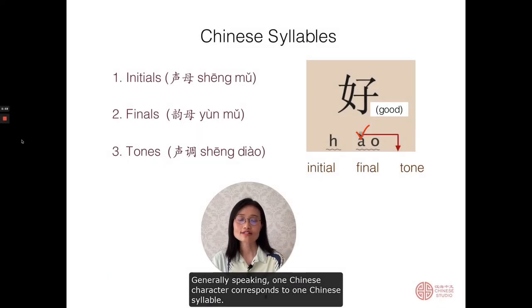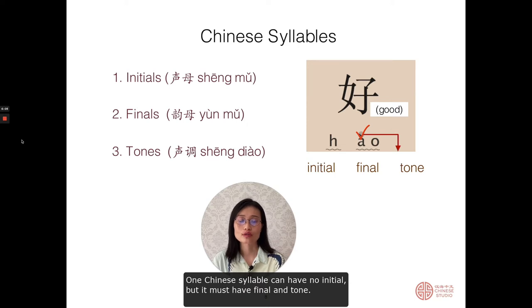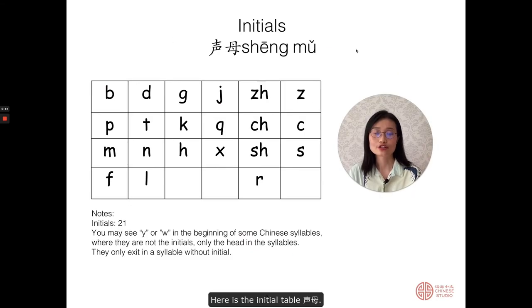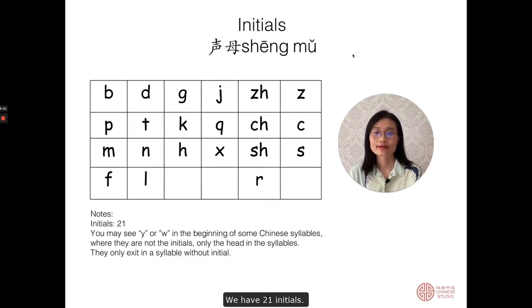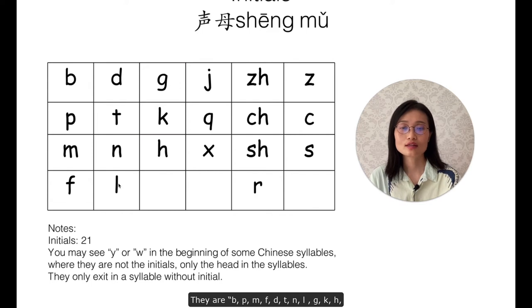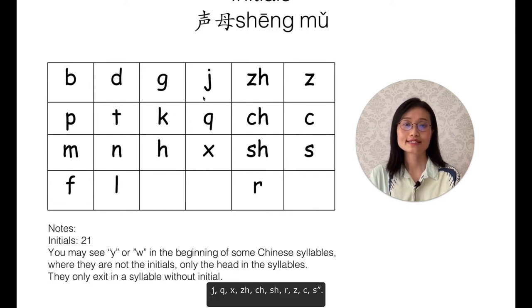Generally speaking, one Chinese character corresponds to one Chinese syllable. One Chinese syllable can have no initial, but it must have a final and a tone. Here is the initial table — 声母. We have 21 initials: bo, po, mo, fo, de, te, ne, le, ge, ke, he, ji, qi, xi, zhi, chi, shi, r, zi, ci, si.